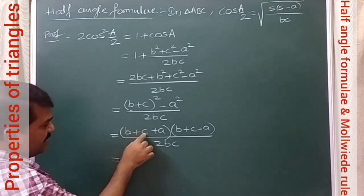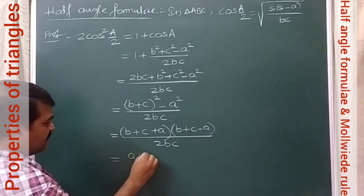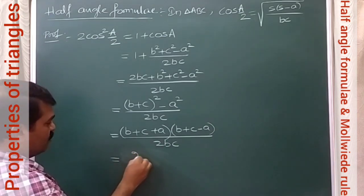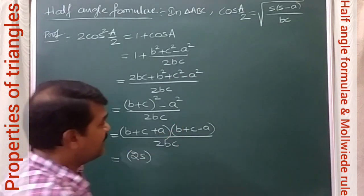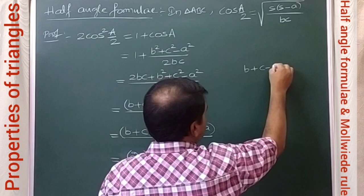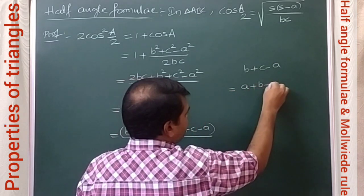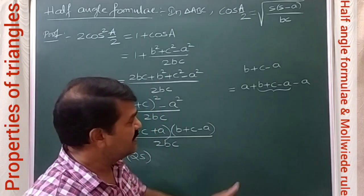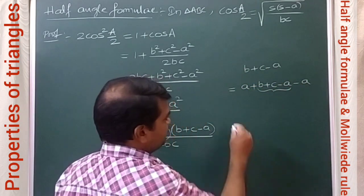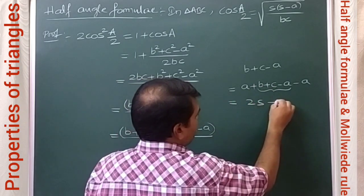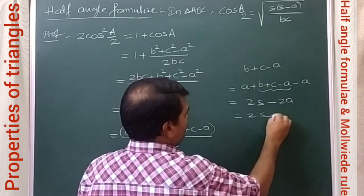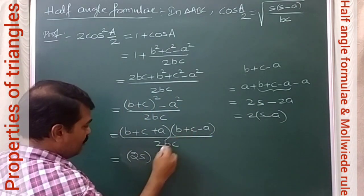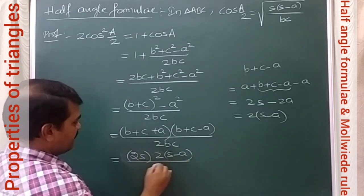Now b + c + a = a + b + c = 2s. For b + c − a: adding and subtracting a gives (a + b + c) − 2a = 2s − 2a = 2(s − a). So the expression becomes 2s · 2(s − a) / 2bc, which equals 2 cos²(A/2).